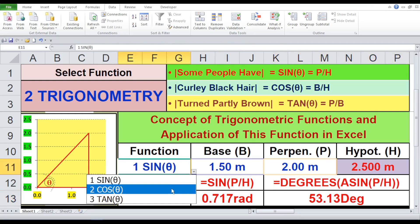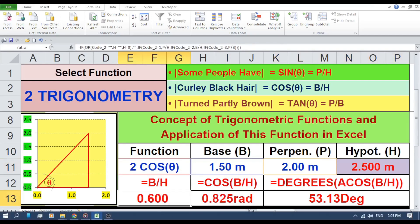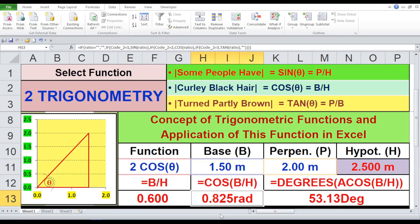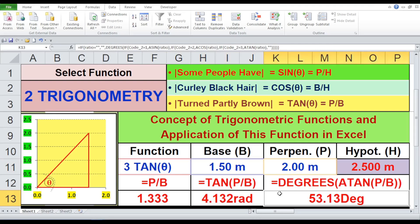Trial 3B, function cos. B by H equals 0.600. Cos B by H equals 0.825 radians. Base angle theta equals 53.13 degrees. Trial 3C, function tan. P by B equals 1.333. Tan P by B equals 4.132 radians. Base angle theta equals 53.13 degrees. Since the base angle theta is the same, it proves our calculation is perfectly alright.